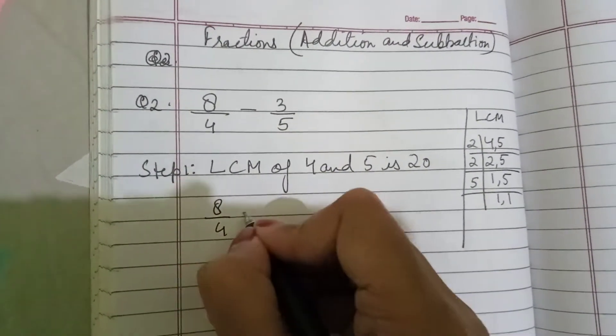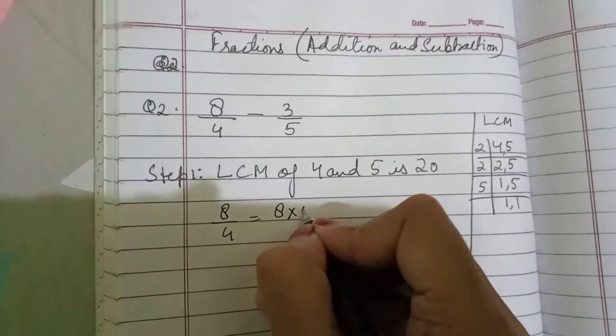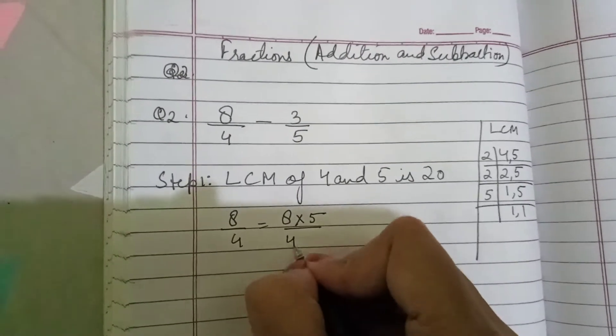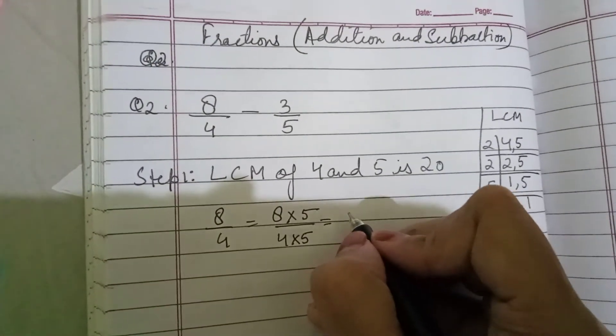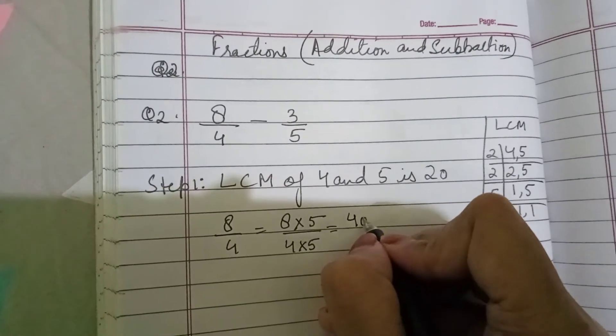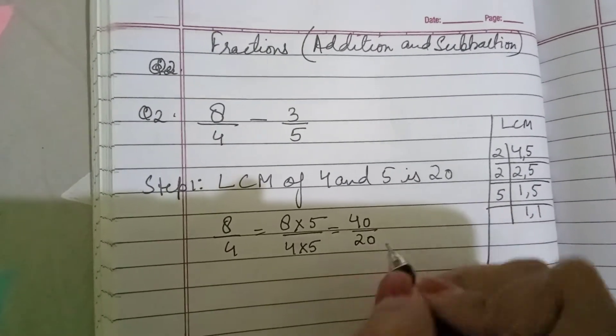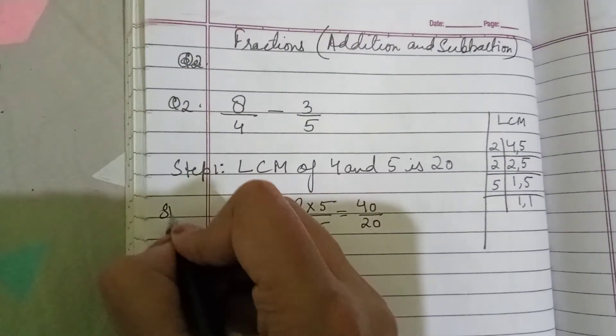So, 8 upon 4 is equal to 8 times 5 upon 4 times 5. 8 into 5 is 40 and 4 fives are 20. This is step number 2.